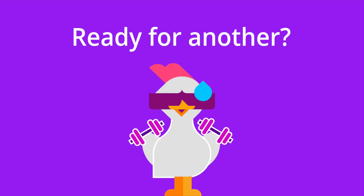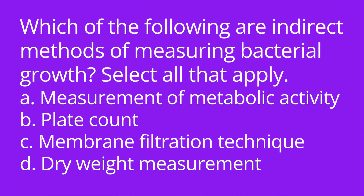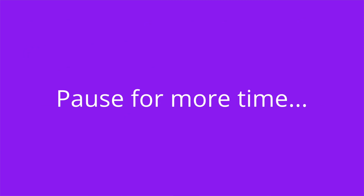Question number three: which of the following are indirect methods of measuring bacterial growth? Select all that apply. A, measurement of metabolic activity. B, plate count. C, membrane filtration technique. D, dry weight measurement. The answer is A and D.